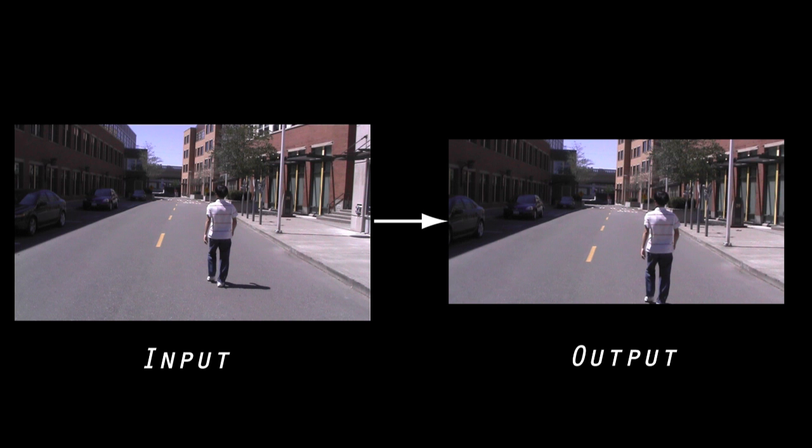Then we try to simulate what the camera would have seen from this new camera path. However, in order to preserve scene motions, we add the constraint that each output frame is a warp of a single input frame at the same moment in time.